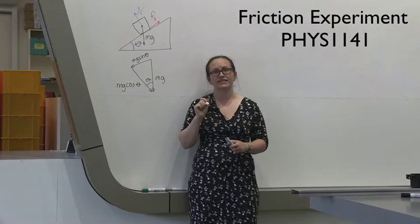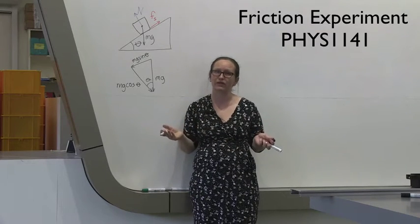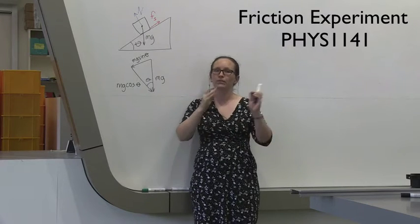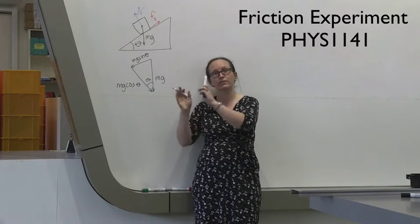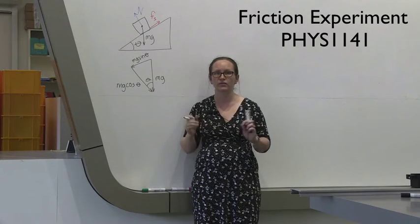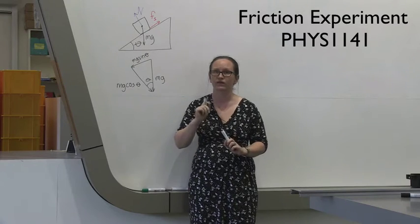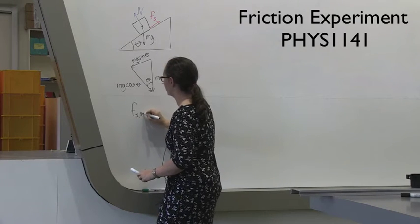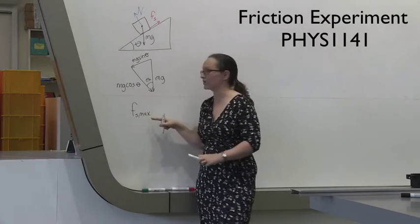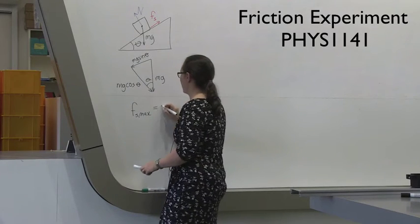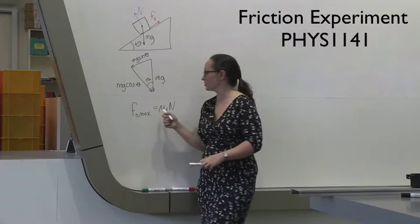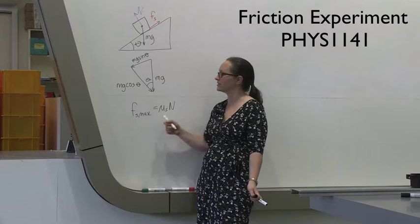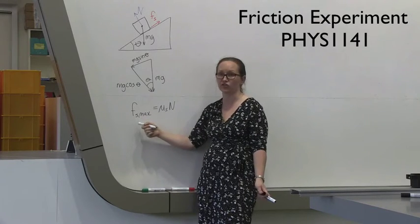Now if the block is sitting stationary on the plane, we know that it's in equilibrium, which tells us that all forces are balanced. And moreover, all the perpendicular to the plane forces are balanced, and all the parallel to the plane forces are balanced. So we can make use of this. The coefficient of static friction is defined as the maximal possible static frictional force is given by mu s times n. So in order to find mu s, we need to know what n, the normal reaction force is, and what this maximal static friction force is.